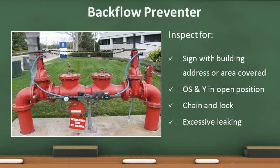Backflow preventers prevent water from flowing backwards into the street side supply. This one has an outside stem and yoke design, commonly called OS and Y. When the stem is outside, as in the picture, it indicates the valves are open. If the stem was not visible, it would indicate the valve is closed. There are two valves in case one fails. When properly installed, the stem valve is in the upright position. When conducting an inspection, look for excessive corrosion anywhere on the valve. The tamper switch and conduit should be intact and without damage.